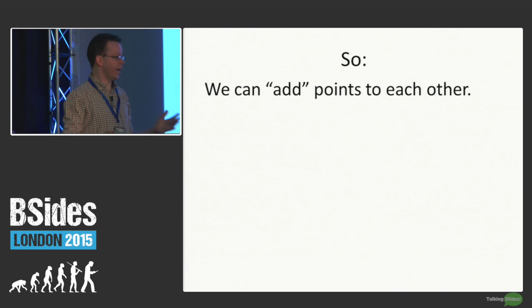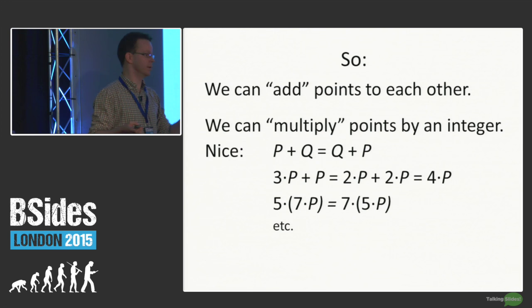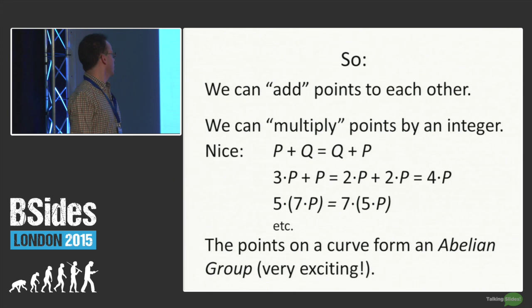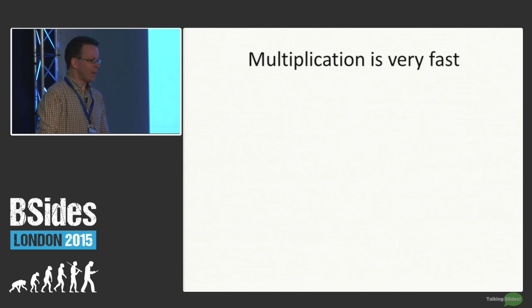So we can add points to each other — take points P and Q, we define the point P plus Q. We can multiply points by an integer. This all satisfies nice properties: P plus Q equals Q plus P, et cetera. This means that the points form an abelian group. You don't have to know what that means or even remember it — but if you're a mathematician or a cryptographer, this is extremely exciting.